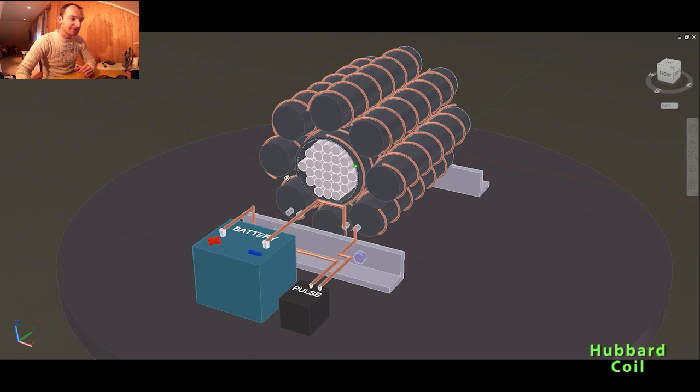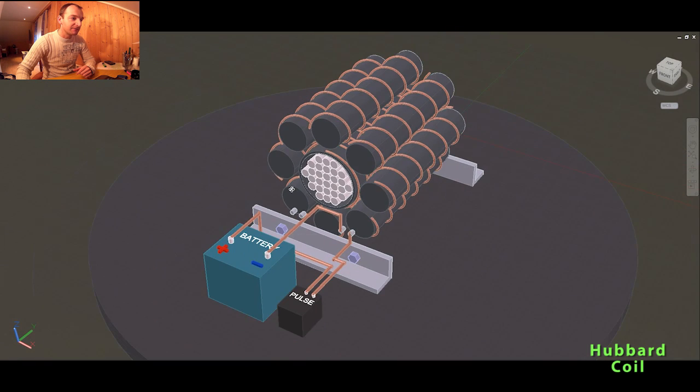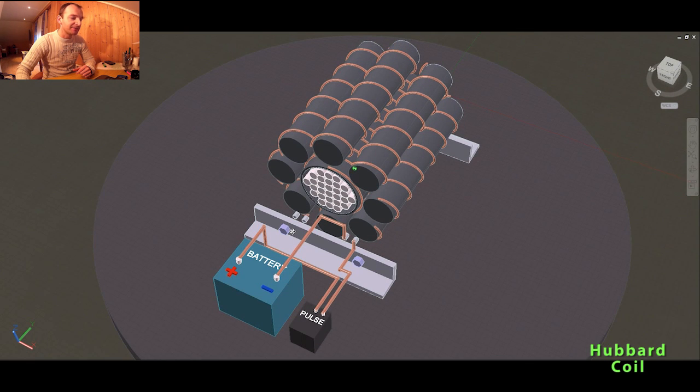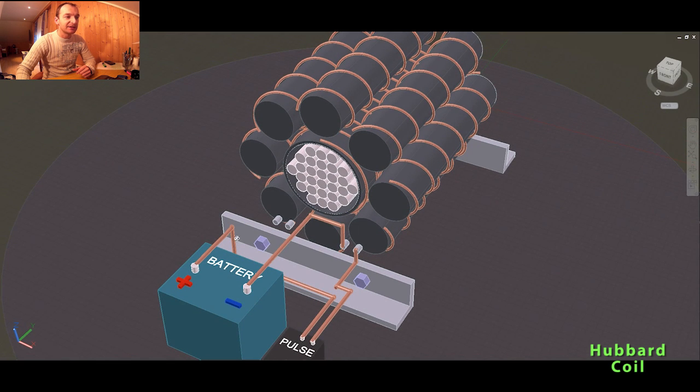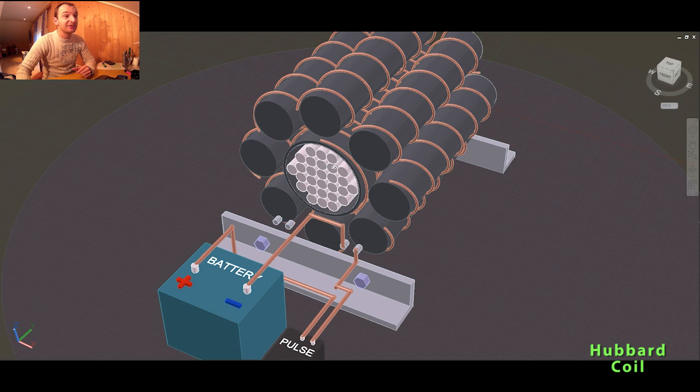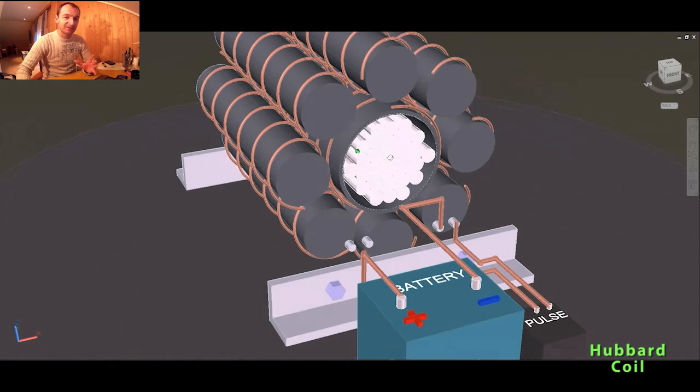So Hubbard demonstrated this a long time ago, that if he connects only small time the DC input with this pulsing signal, he will get an output which is bigger than input. I personally do not believe that, but it does have sense because of this magnetization.